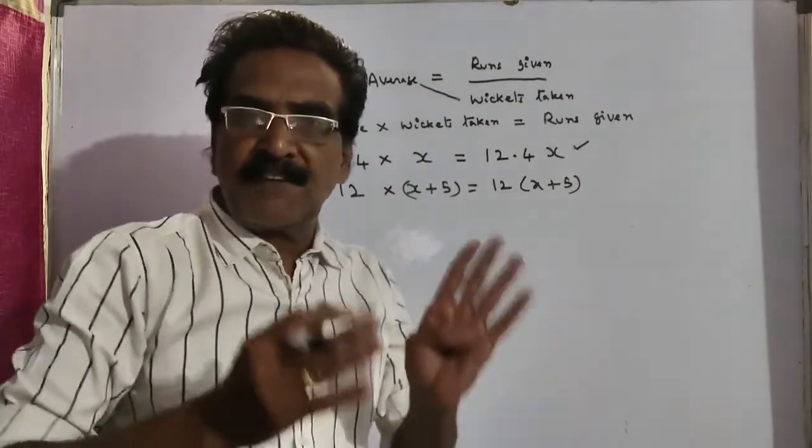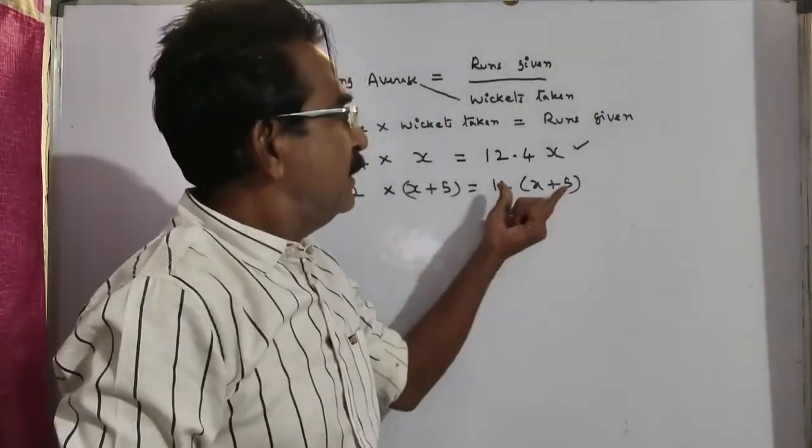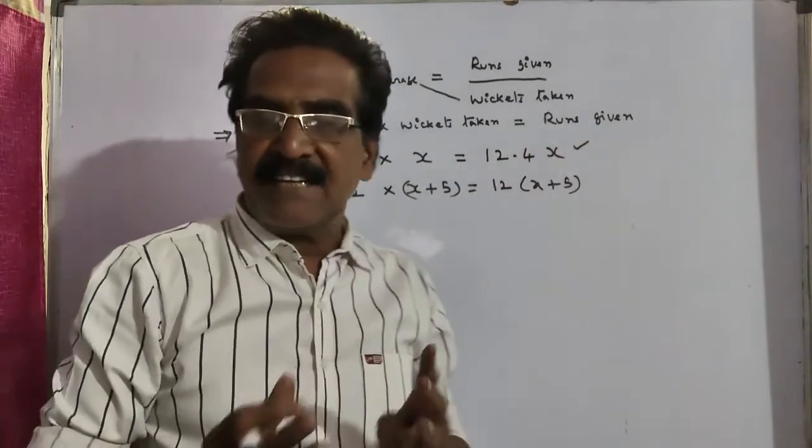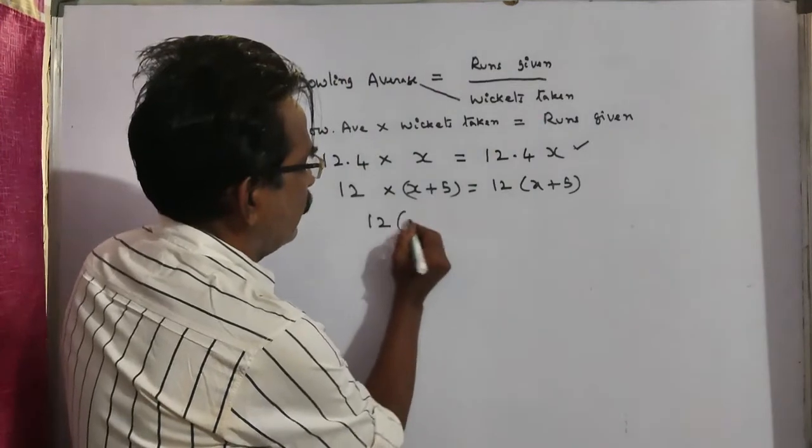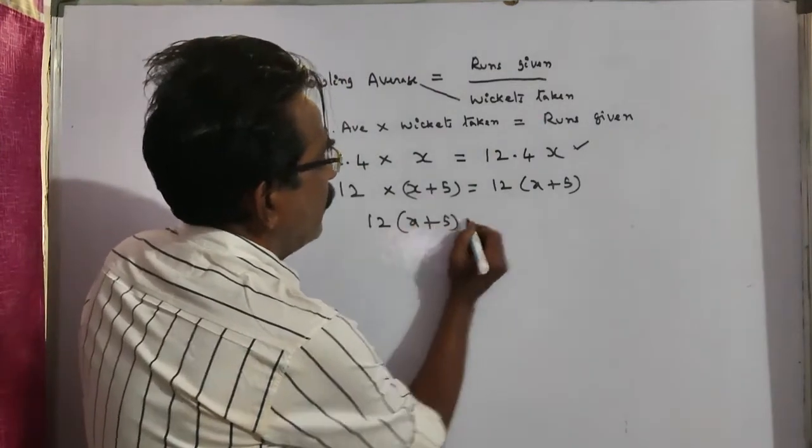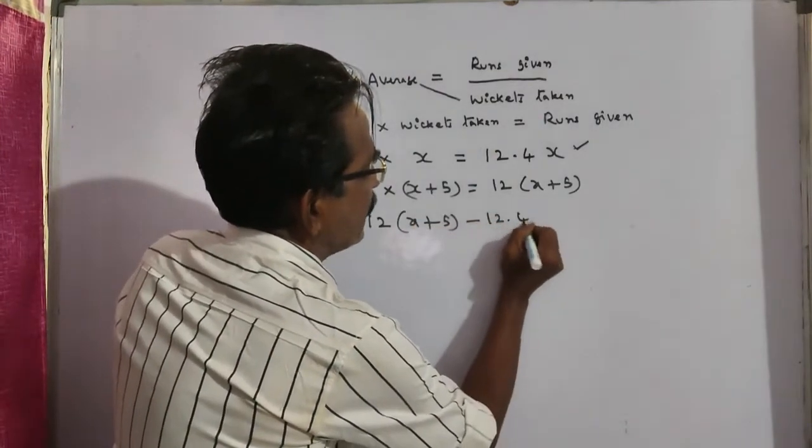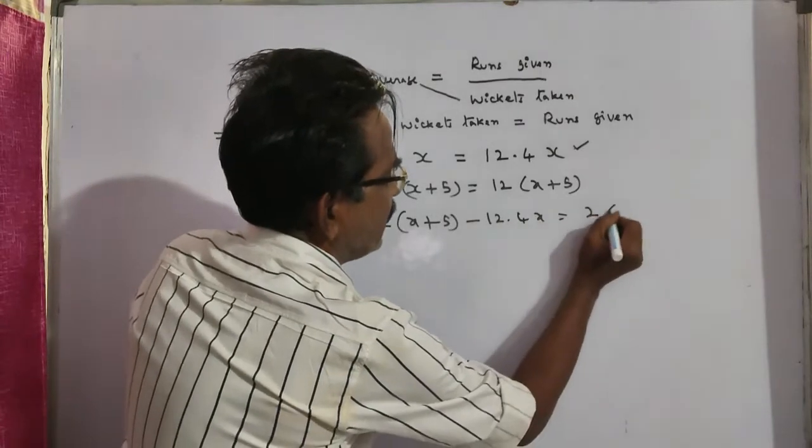This is the total number of runs up to the current match. This minus this will give us the runs given in the present match. 12 into x plus 5. 12 into x plus 5. Minus 12.4 x is equal to 26 runs.